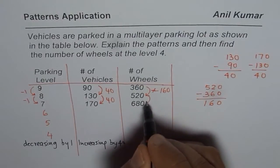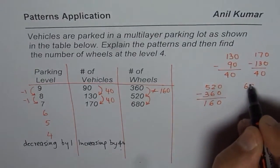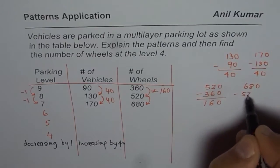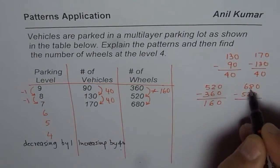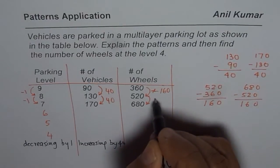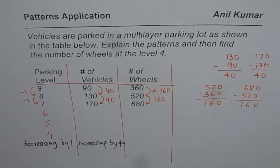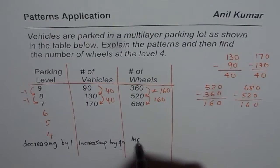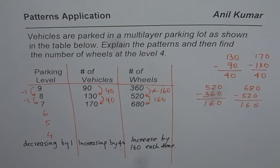And next time, again it is 680 minus 520. So 0, 6, and 1. Again it is 160. So in the third case, number of wheels increases by 160 each time. That is the pattern which we observe.